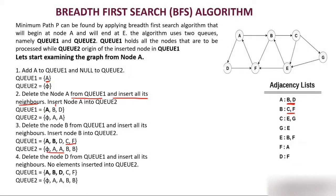Now delete node D from Q1 and check its neighbors. The neighbor of D is F, but F is already in the queue, so we do not insert it again. Similarly, if A were a neighbor it is already processed, so we skip it. We bold/mark D as processed. Nothing changes in Q2 for this step.